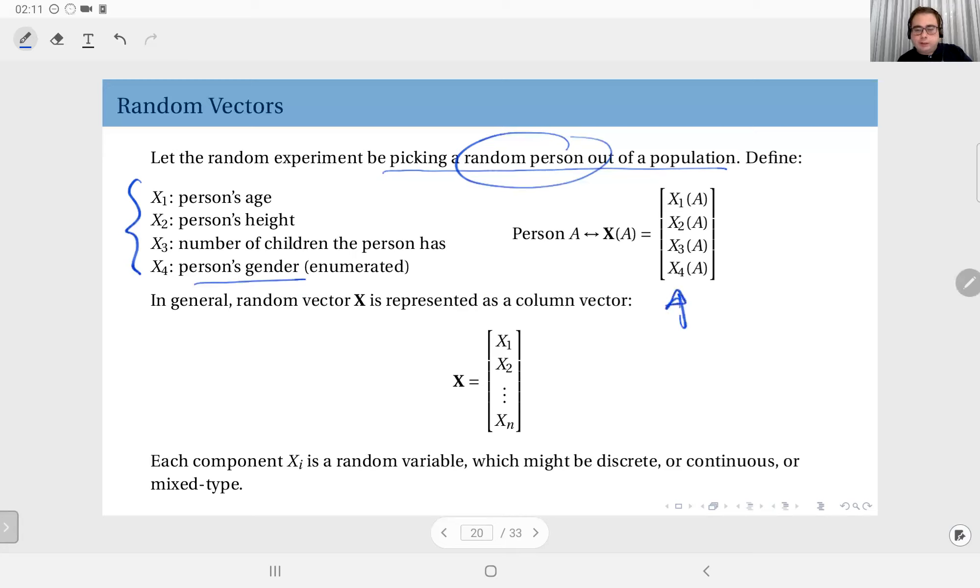These four, you see, are also random variables. You can see this as the assignment of a four-dimensional vector assigned to the selection of this person, or alternatively, you can see this random experiment producing four different random variables and then combining them together to obtain a random vector. Both approaches are valid.